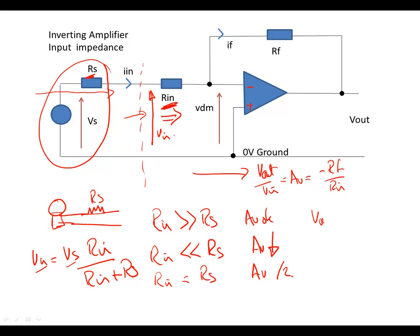So if you've got V out over VS, you would effectively have your minus RF over R in, and then you'd multiply by R in over R in plus RS. You can see clearly how the actual gain is changing as a function of that source impedance. So what do we do about it? Do we just ignore it? Do we account for losses? You could take the gain equation and you could compensate for the losses.